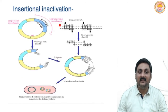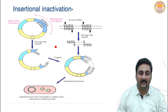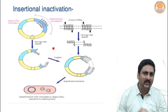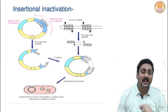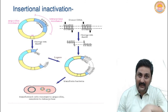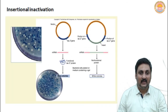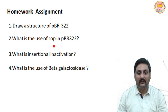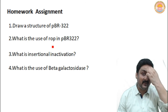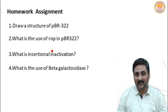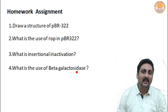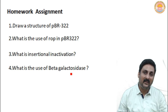This diagram is of insertional inactivation. When two DNA molecules join together, we use an enzyme called DNA ligase to join the vector DNA and desired DNA — and only after that do we try to send it inside the host organism. Homework assignment: draw a structure of pBR322. What is the use of ROP in pBR322? ROP produces a protein useful for the replication of the vector. We have already explained insertional inactivation. What is the use of beta-galactosidase enzyme? It produces a protein called beta-galactosidase which helps in the detection of recombinants.